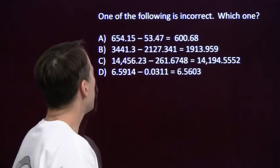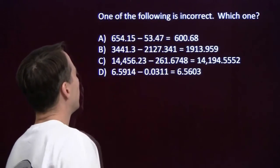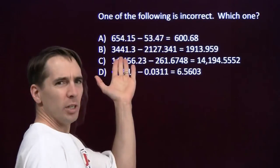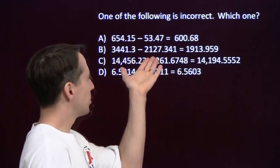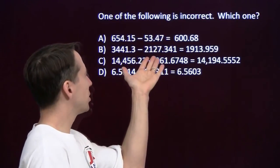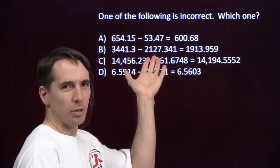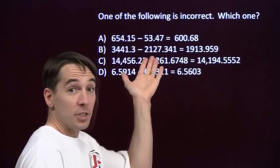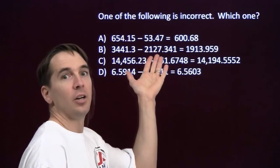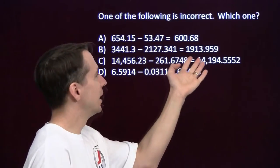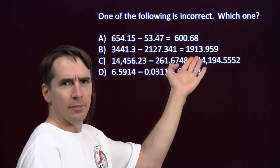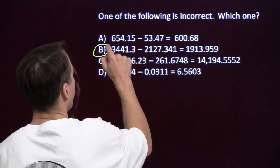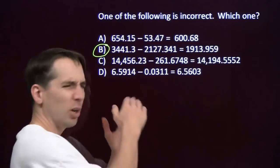On to the next one. I've got a number that's around 3,440, and I'm subtracting a number that's around 2,130. I should get a difference that's around 1,310. That's not even close to 1,310 — my calculator whiffed on that one.